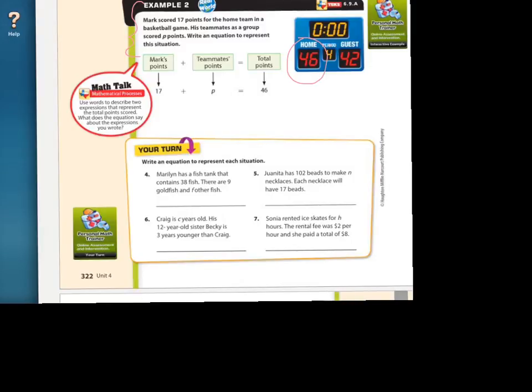scored p points. We don't know how many, so we're putting a p there. A lot of the times, they'll use, like if they're talking about points, they'll use that first letter to, as the variable in the problem. So points start with p. They'll use p. Not all the time. That's not always true, but a lot of times they do that. So we're going to write an equation. So here's Mark's points. They're saying 17, which is what he made, plus whatever the teammates made adds up to 46. And that's it. That's all you're doing. You're not solving it. They're just asking you to write the equation.